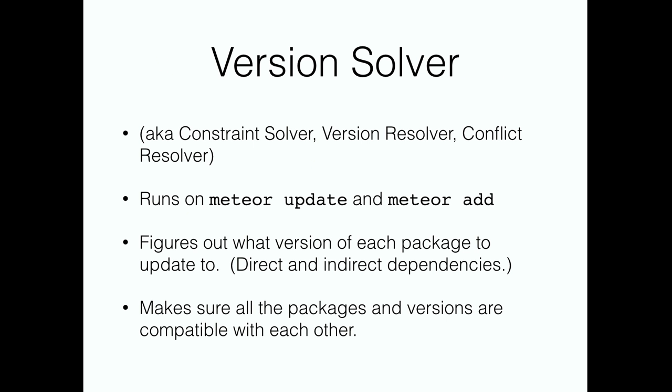The version solver — some of you might be familiar with it — is sort of one of those under-the-hood things that just makes things work. It's also known as the constraint solver or the version resolver. Mainly what it does is it runs whenever you say Meteor update, Meteor add, or Meteor remove, and it figures out what version of each package to update to. This includes your top-level packages that you depend on directly, but also the packages your packages depend on, and so on. It makes sure these packages are all mutually compatible with each other.